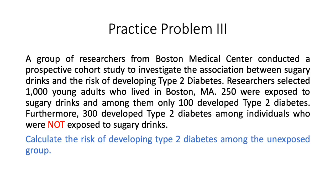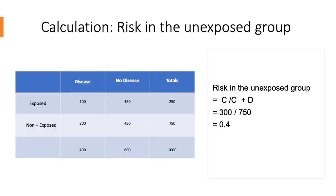This is the third practice problem, in which we will calculate the risk of developing type 2 diabetes among the unexposed group. Risk in the unexposed group is calculated as C divided by C plus D, in which we have 300 divided by 750, giving us 0.4. Individuals who do not drink sugary drinks have a 0.4 risk of developing type 2 diabetes.